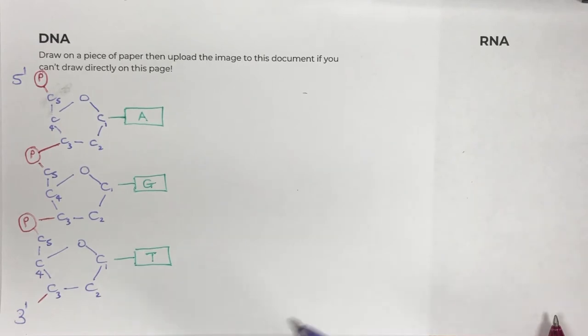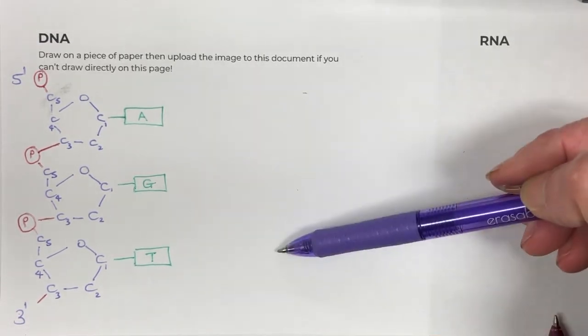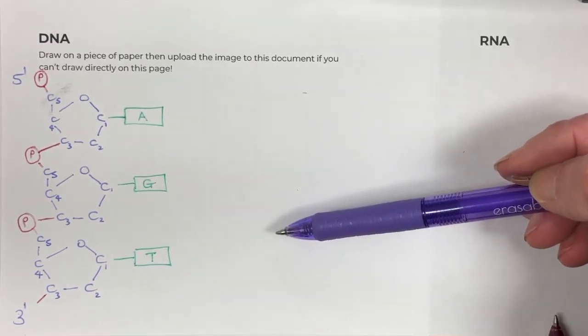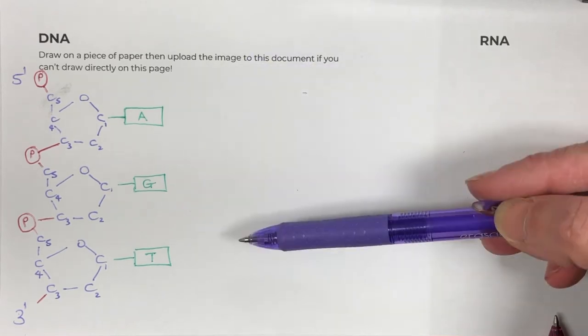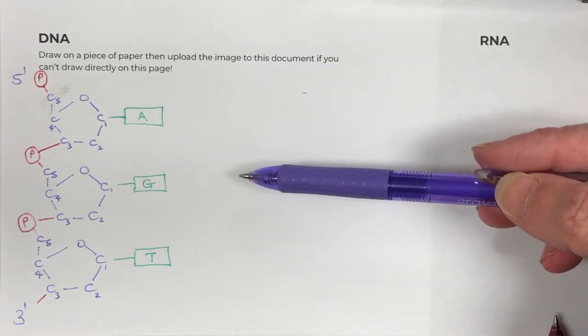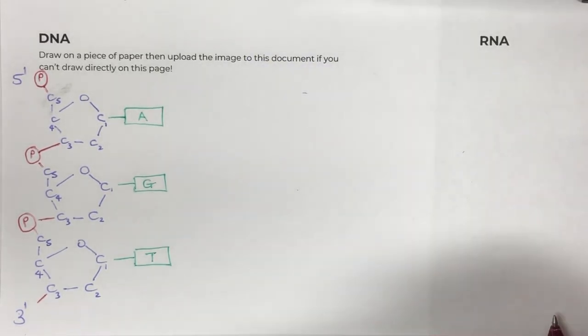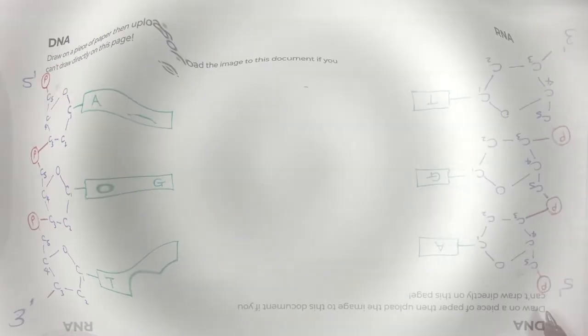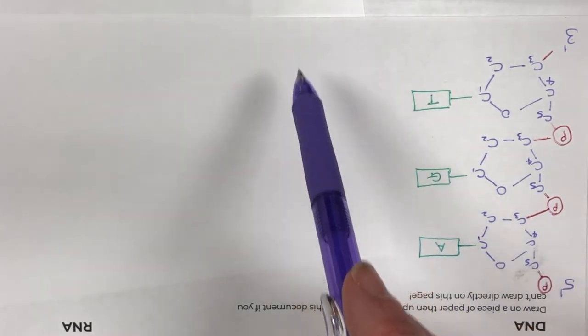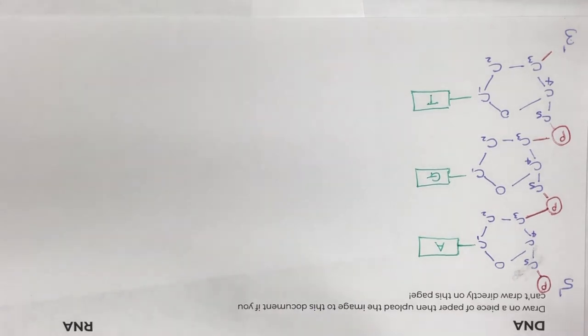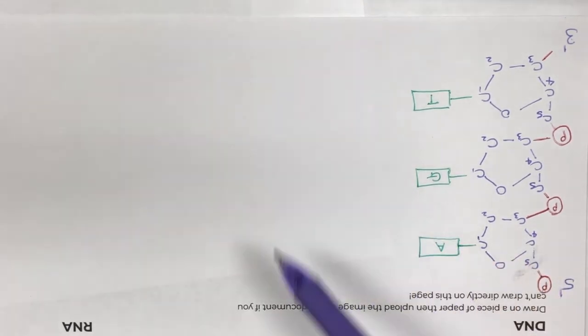Now we don't want to draw the anti-parallel strand next to it, which is completely the same, but on the opposite. Now I am not good at spatial awareness, so I cannot, my mind won't do it that way. So what I do is I turn the paper around. So just give me a moment, I'm going to turn it upside down. Okay, so as you can see, I have turned my paper upside down. So now what I'm going to do is I'm going to draw the anti-parallel strand. If I turn it upside down, it just makes it easier for me to draw it the right way.